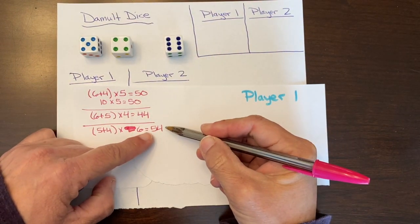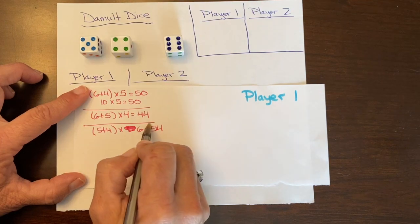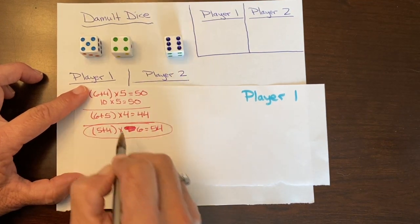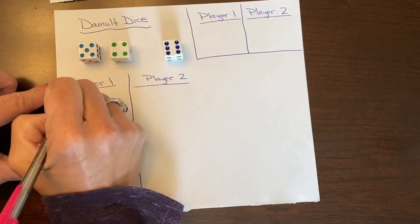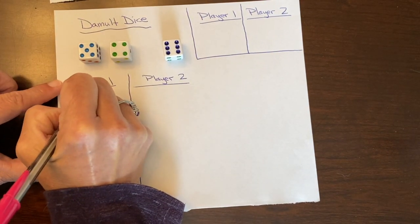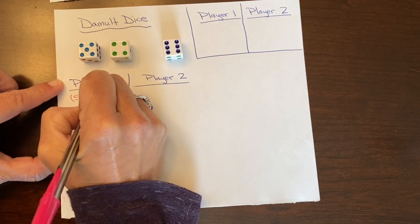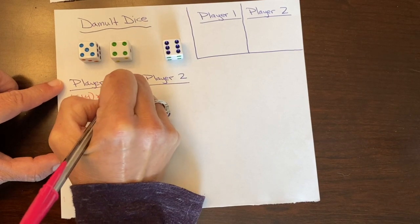And 54 is a greater total than 50, so this is the one I am going to choose to write down here. So player 1 is going to go with 5 plus 4 times 6 equals 54.